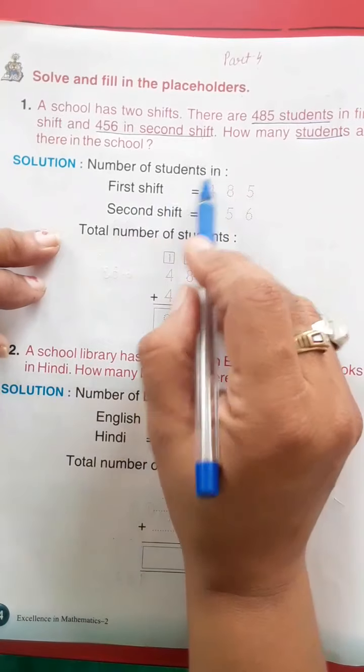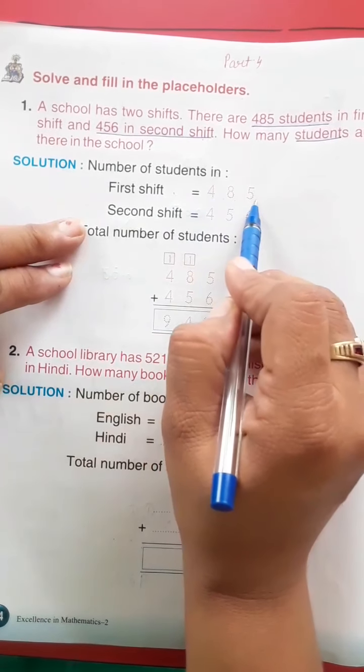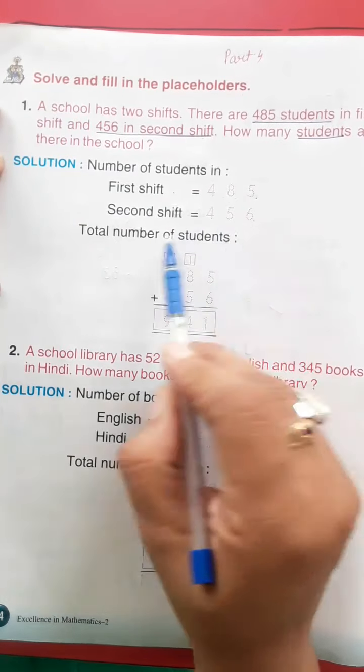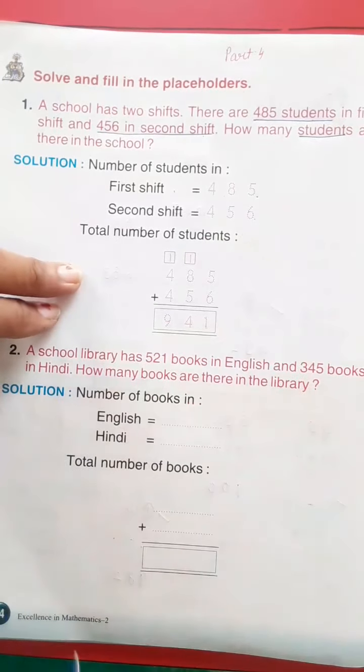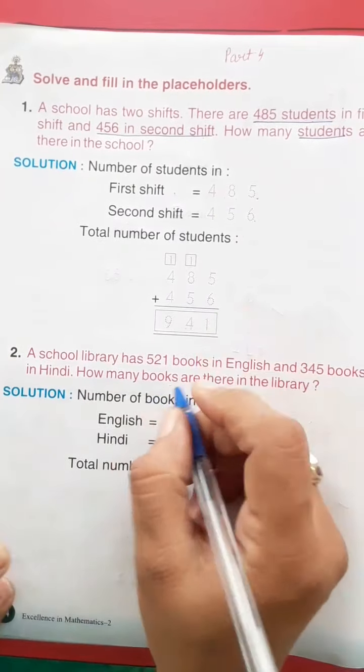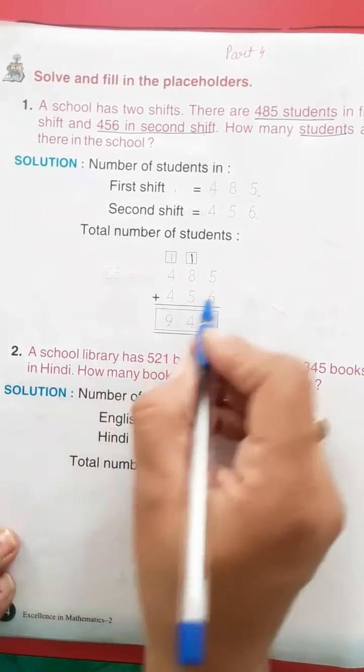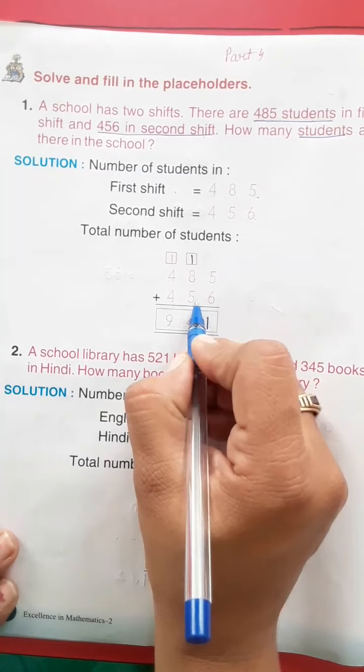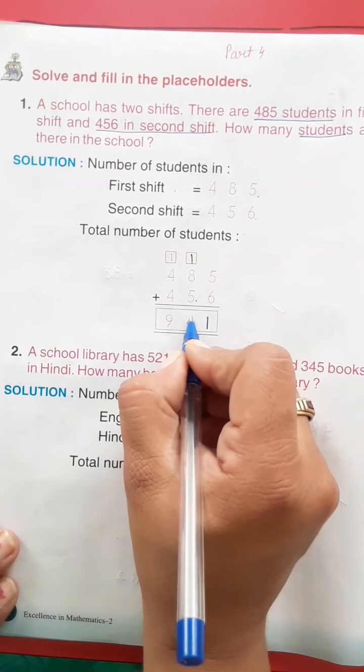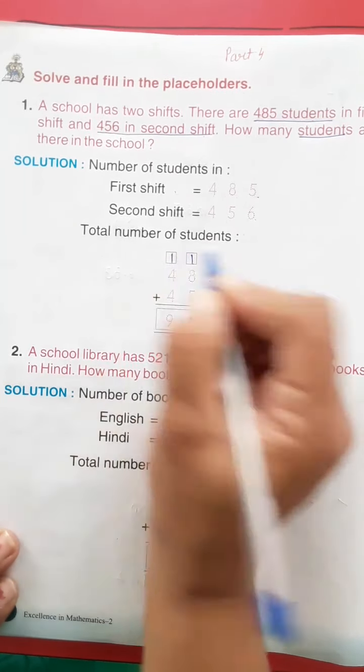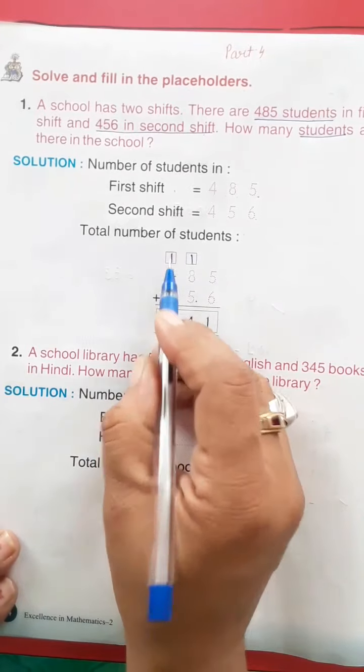The number of students in first shift is 485, second shift is 456. Total number of students is plus. Five and six plus is 11, 1 and 1 carry. Eight and five is 13, plus 1 is 14, 4 carry 1. Four and four is eight, plus 1 is nine. So 941.